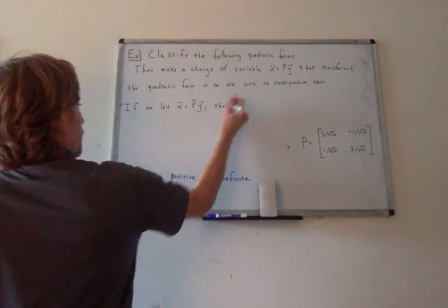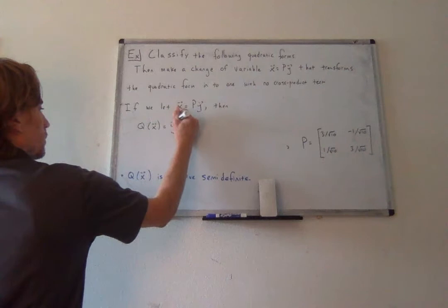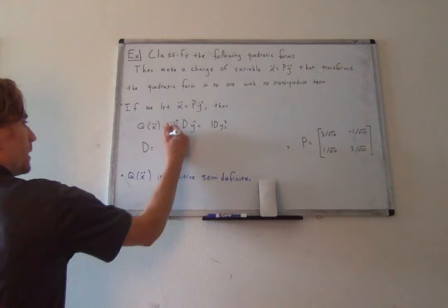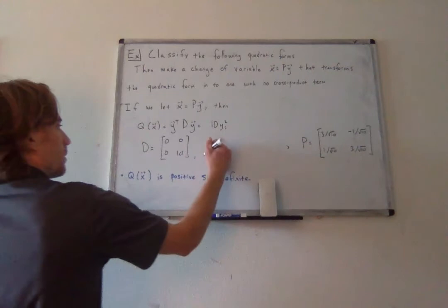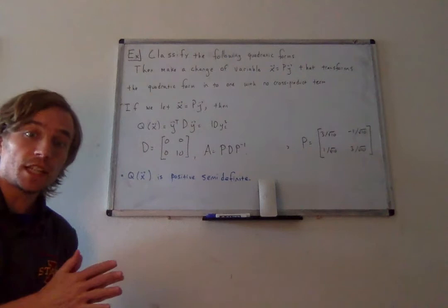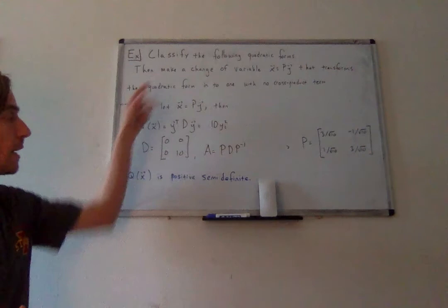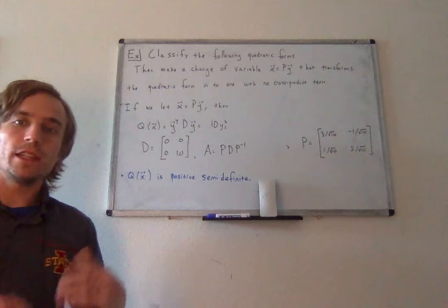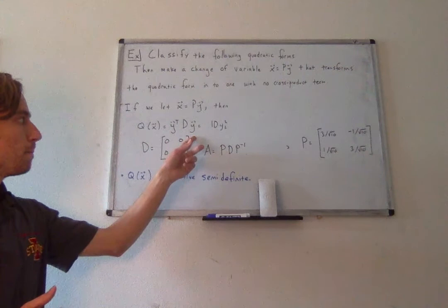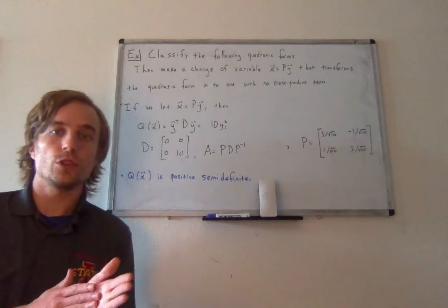Under the change of variable X equals P times Y, where P is the matrix whose columns are the normalized eigenvectors of A, Q of X equals Y transpose D times Y, which equals 10 Y2 squared — because D is the diagonal matrix similar to A obtained via the similarity transformation using P. This transforms Q into a quadratic form with no cross-product term.